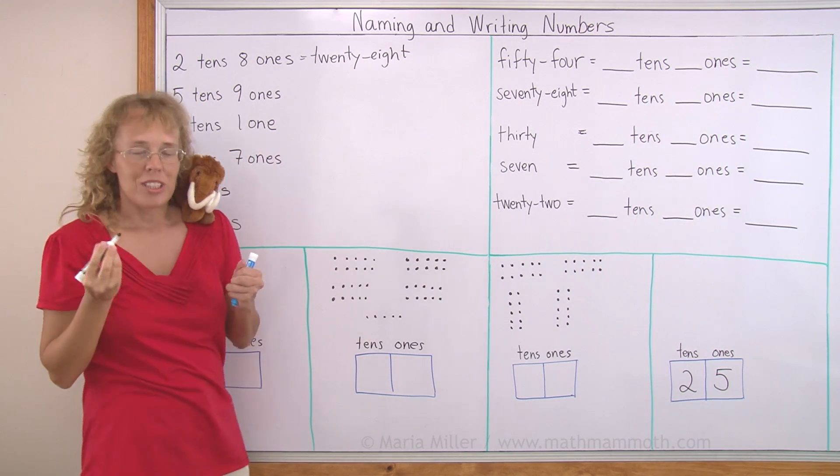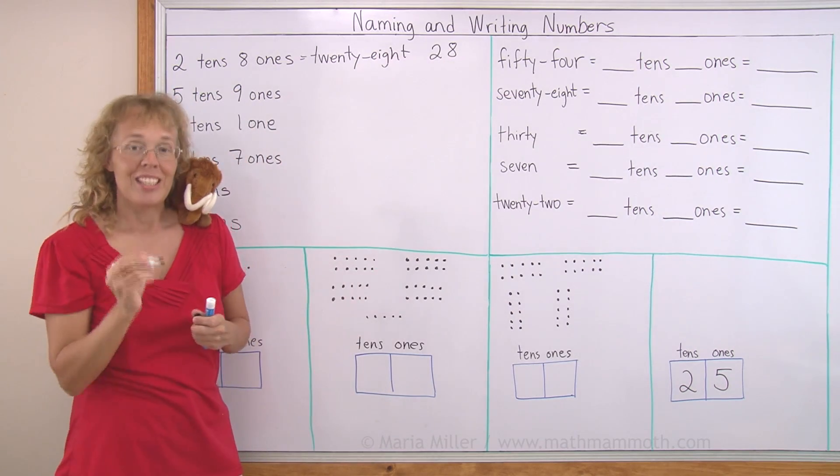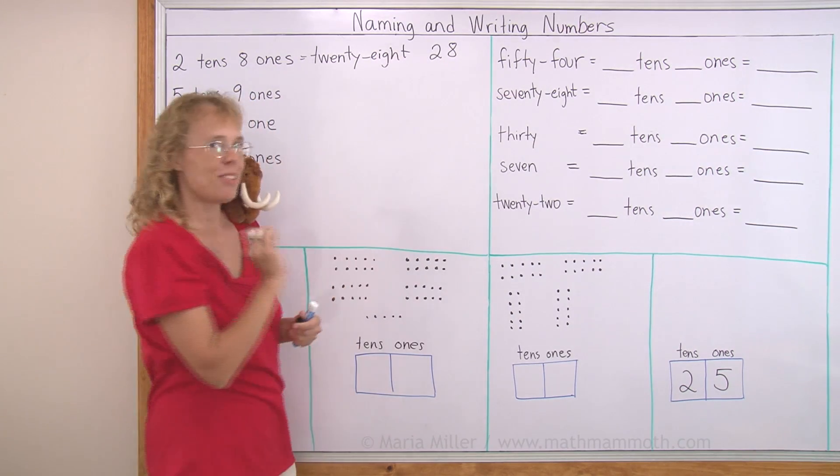And using numbers I write 2, 8. 2 meaning 2 tens, and then 8 meaning 8 ones.